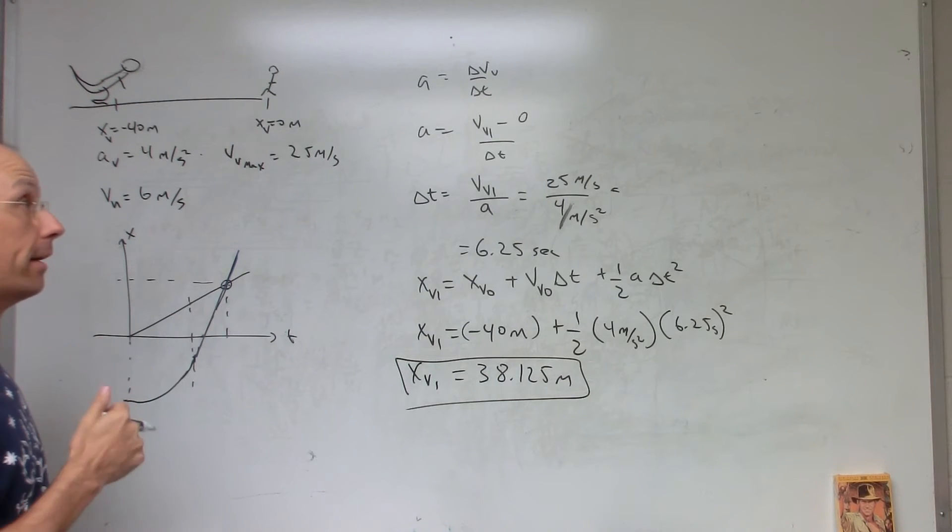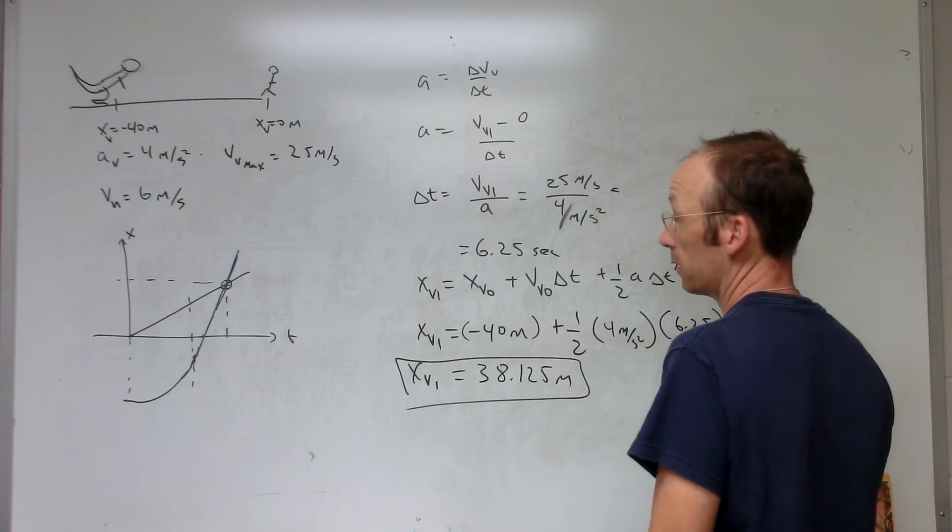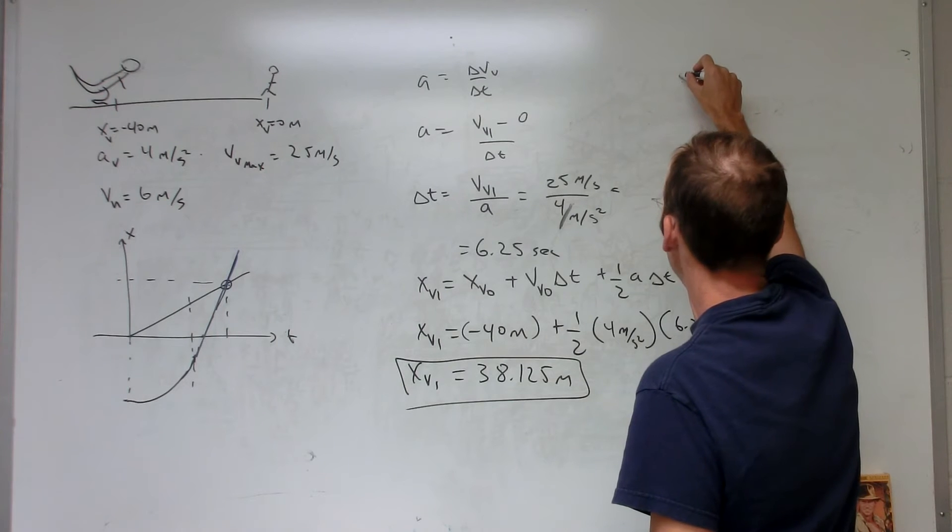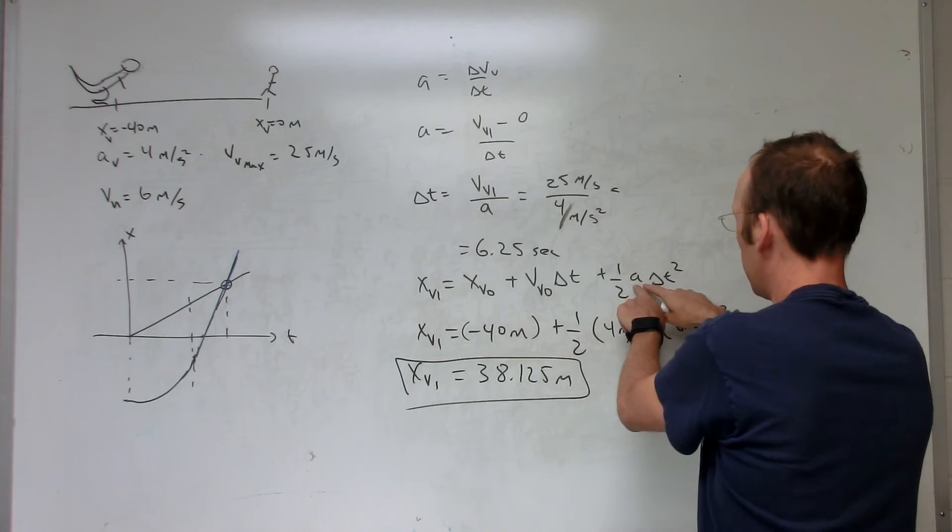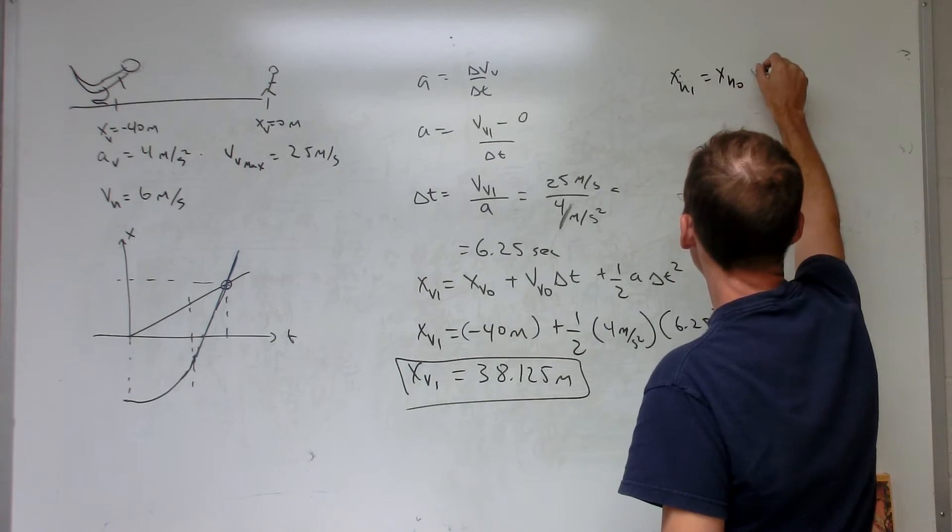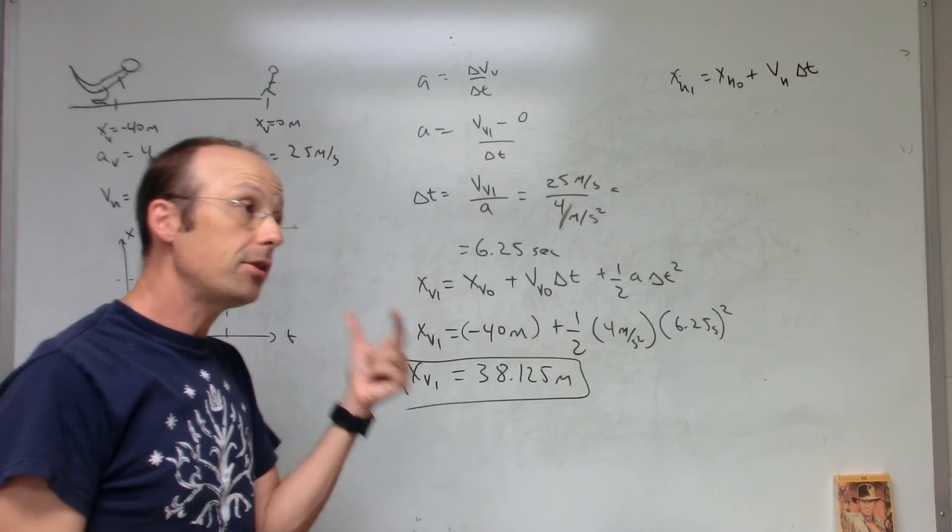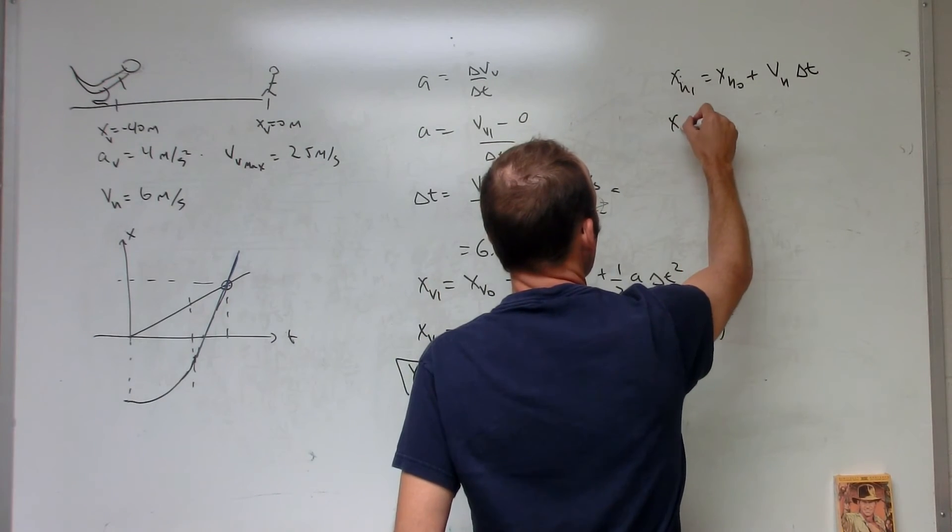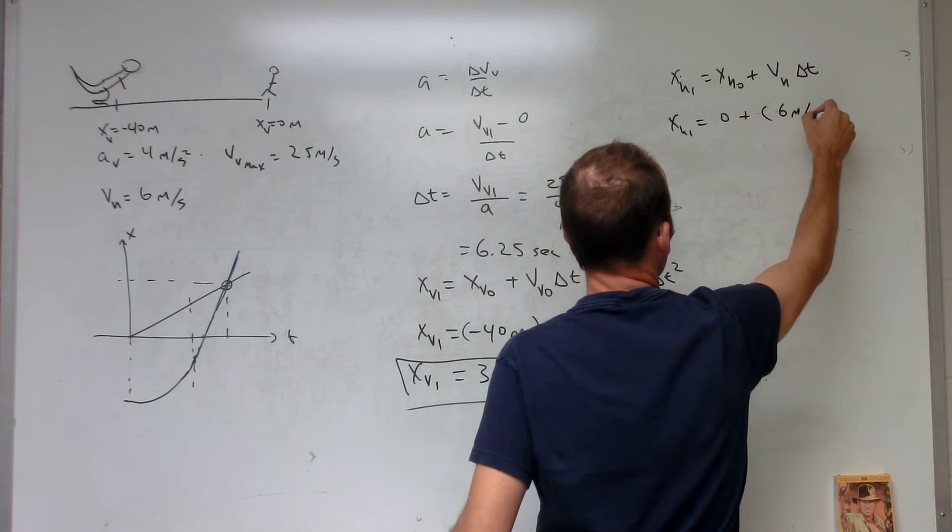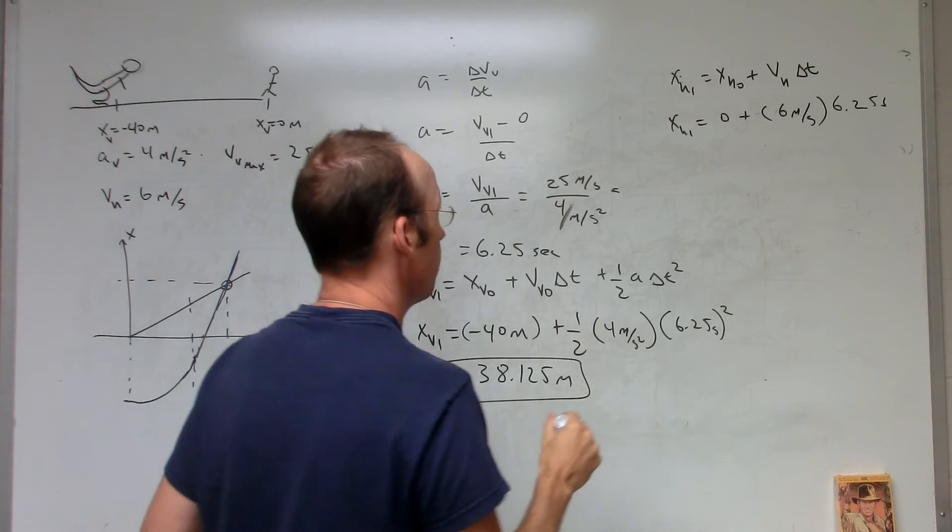Now let's go back to the human. Where is the human at the end of this time? For the human, it has a constant velocity. I could use the same kinematic equation, but the human has an acceleration of zero. So x human one equals x human zero plus v human delta t. So I'll use that same time and find out where the human is. I get x human one equals zero plus the velocity of the human is six meters per second times 6.25 seconds, and I get 37.5 meters.